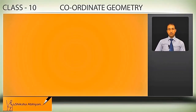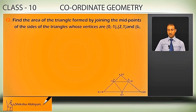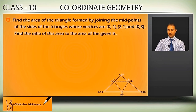Find the area of the triangle formed by joining the midpoints of the sides of the triangle whose vertices are (0, -1), (2, 1), and (0, 3). Find the ratio of this area to the area of the given triangle.